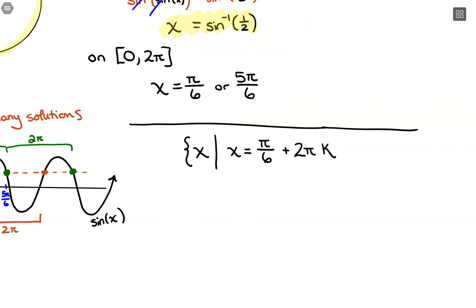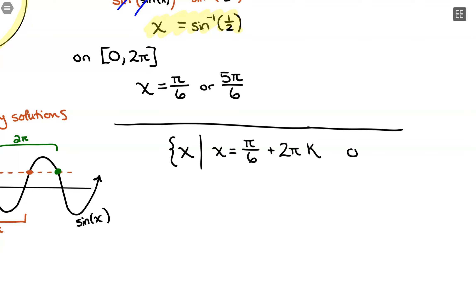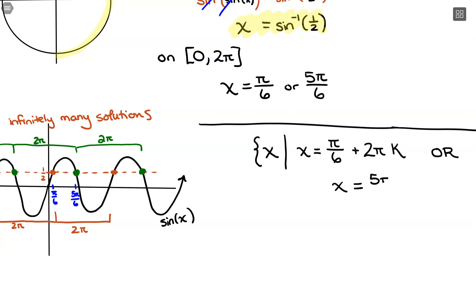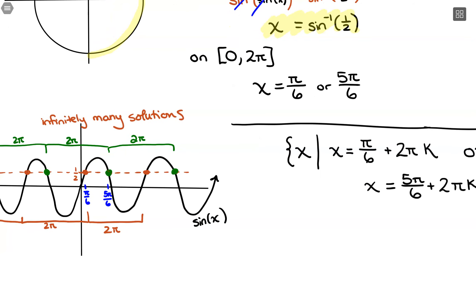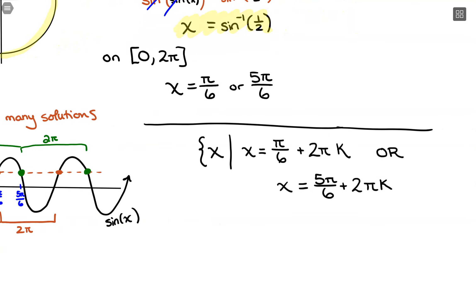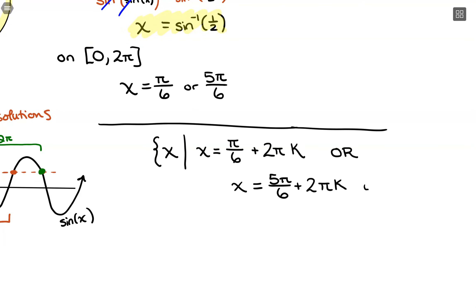This is one set of solutions, but we have a second set. So: or x can equal 5pi/6 plus 2pi times k, where k is an integer. Plugging in 0 gives 5pi/6; adding 2pi takes us to the next intersection; subtracting 2pi jumps the correct increment back to that intersection value.